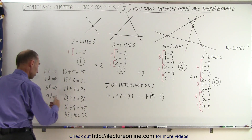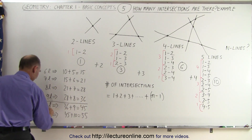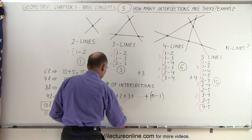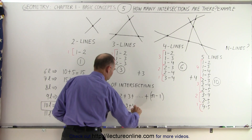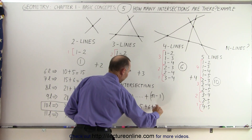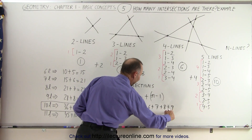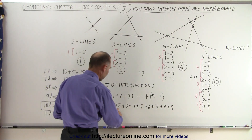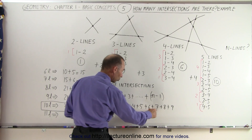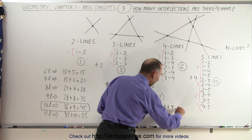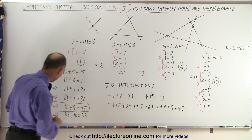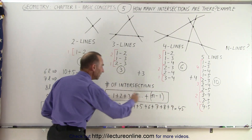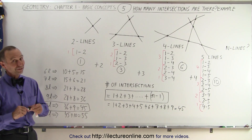Let's try it with 10 lines as an example and see if that works out. The number of intersections is equal to 1 plus 2 plus 3 plus 4 plus 5 plus 6 plus 7 plus 8 plus 9 — since 9 is n minus 1 because there are 10 lines, and 10 minus 1 is 9. Adding those up: 3, 6, 10, 15, 21, 28, 36, 45. And that was indeed the answer when we have 10 lines. So this is the general case for n lines — you'll have this many intersections. And that's how it's done.